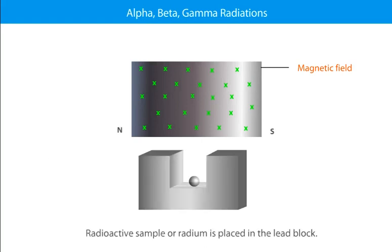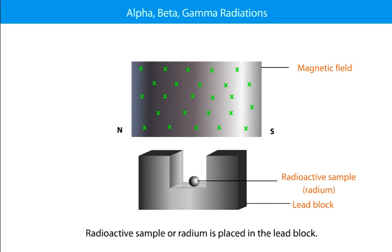Let us conduct an experiment to understand the path of these radiations in a magnetic field. First place a radioactive sample or radium in a lead block as shown.